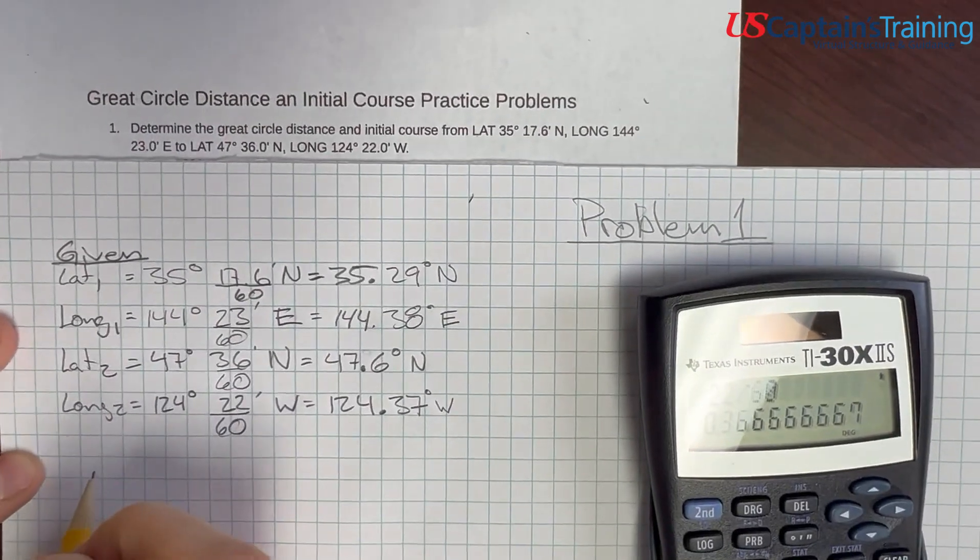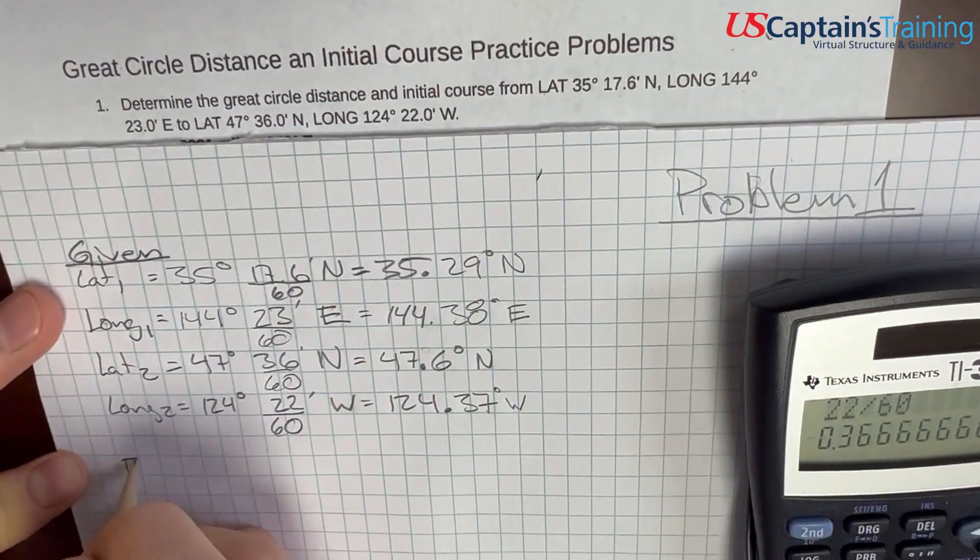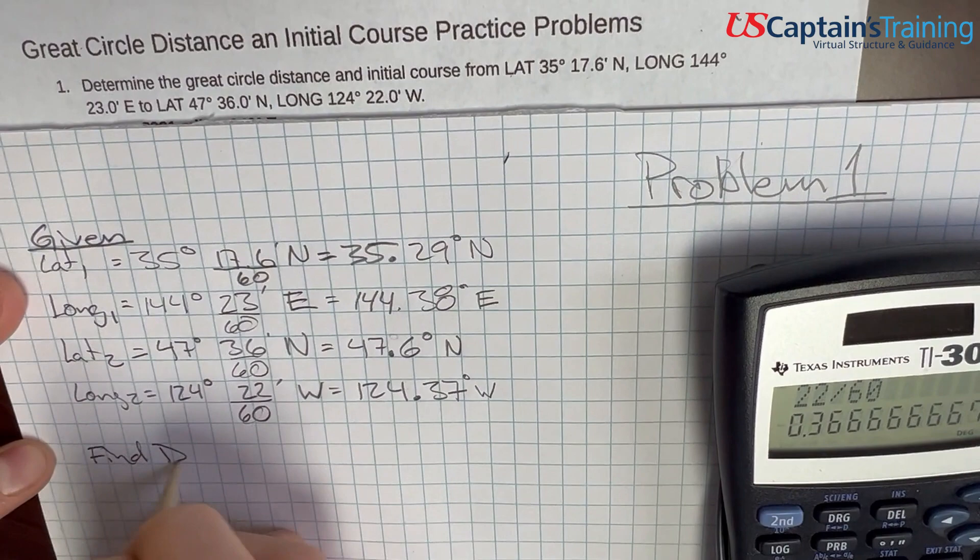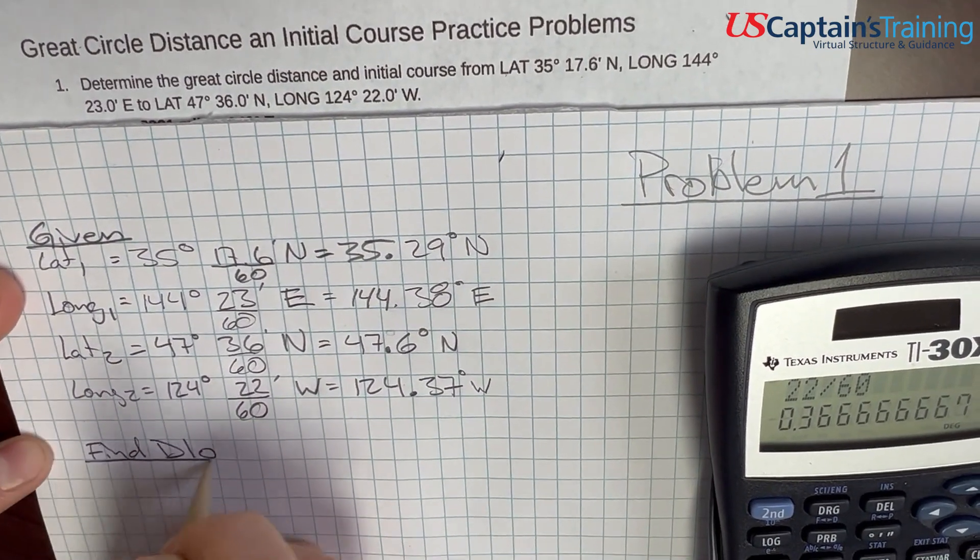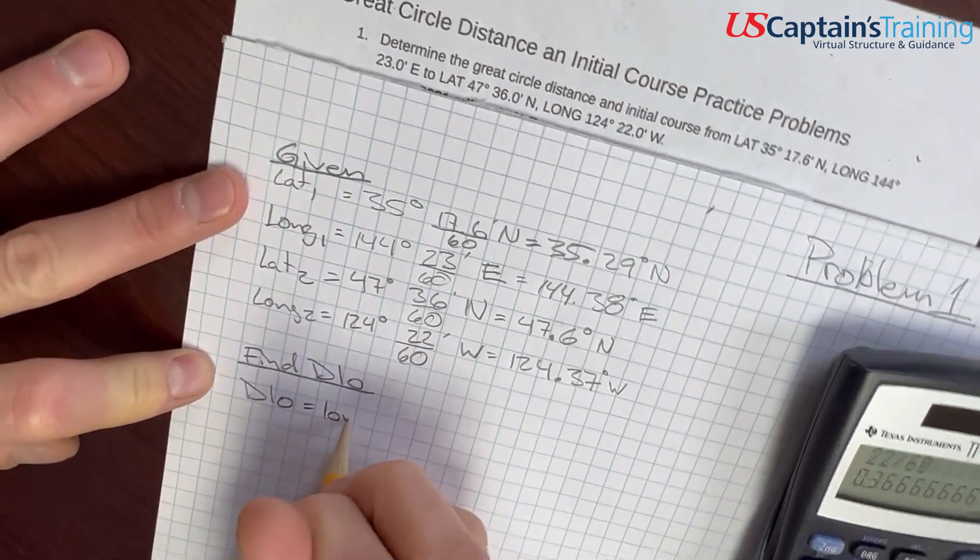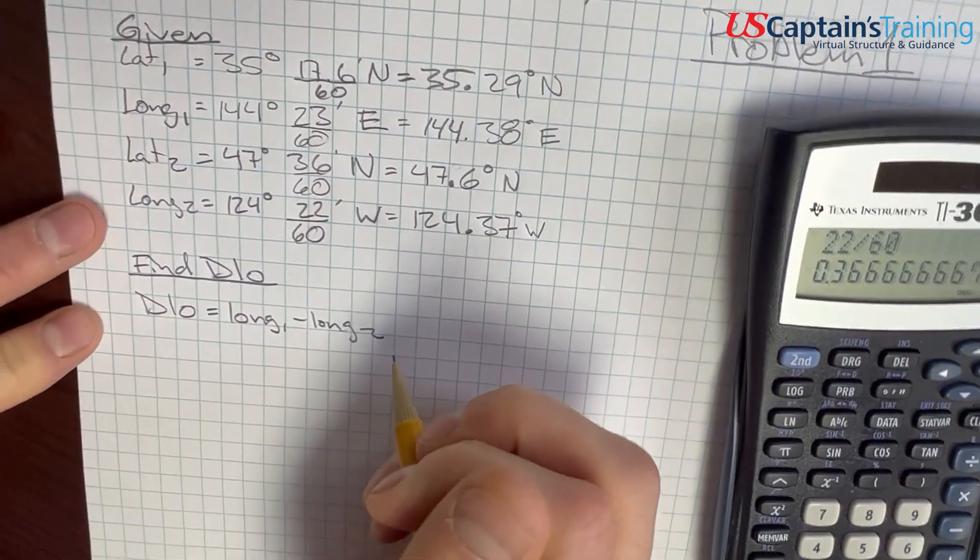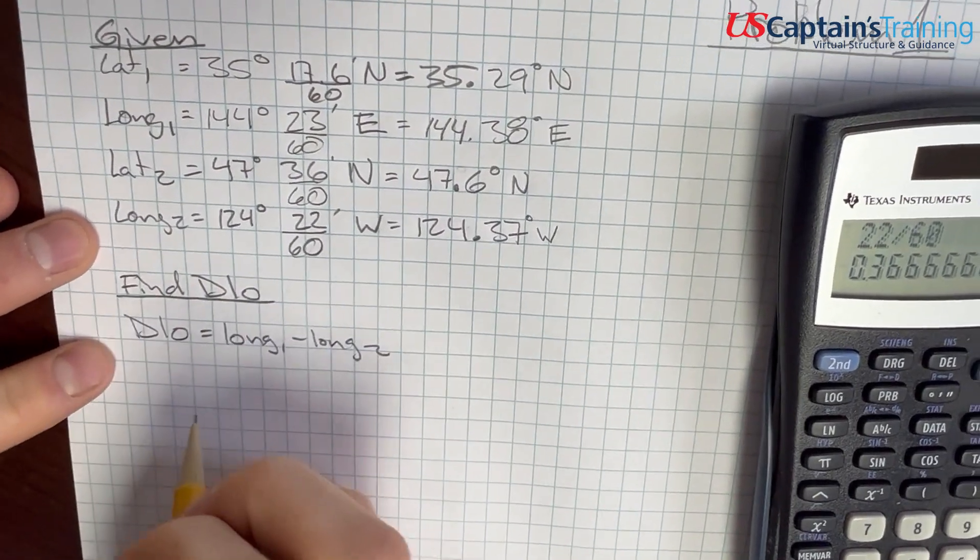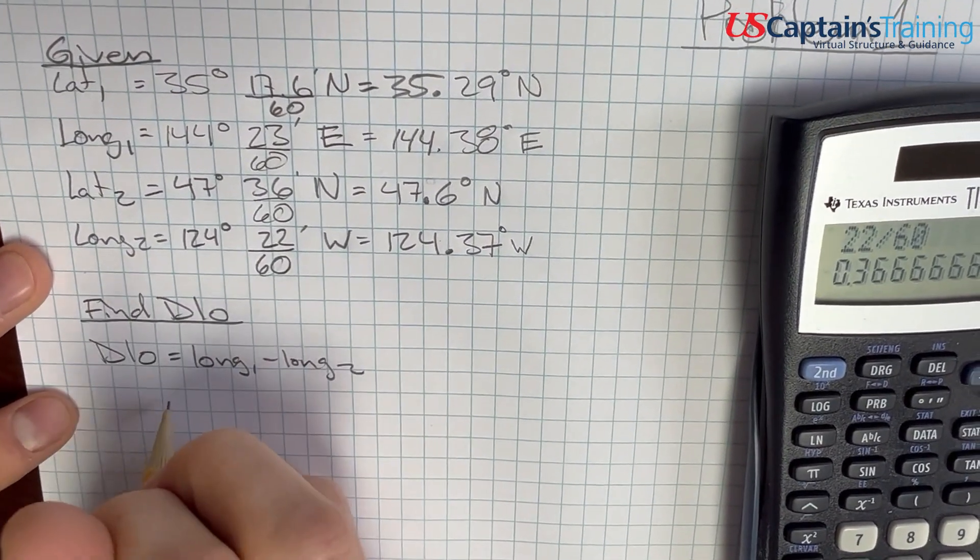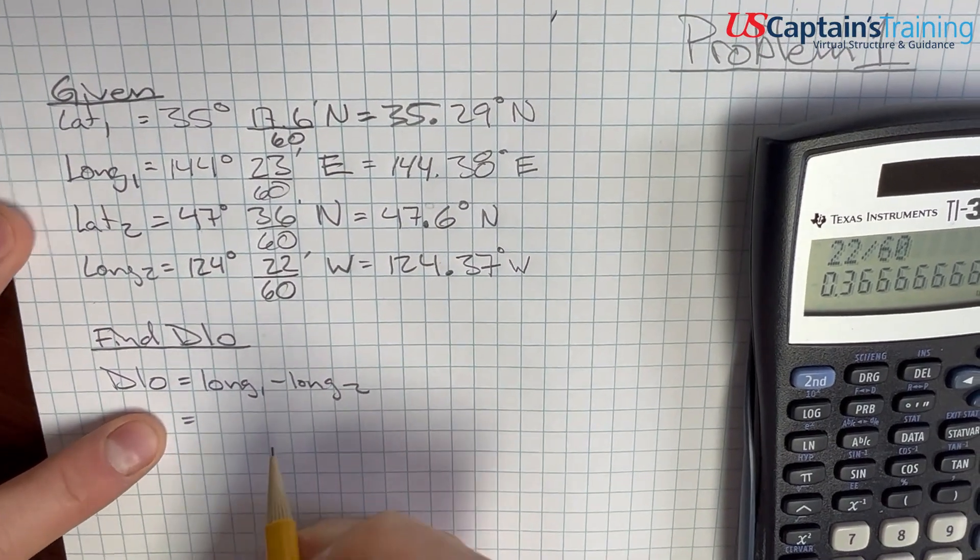Now, the next thing we need to do is find the difference in longitudes, which is called D low. So, we need to find D low, and D low is equal to long 1 minus long 2.